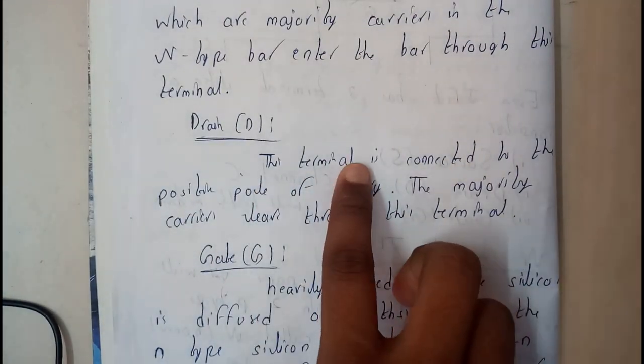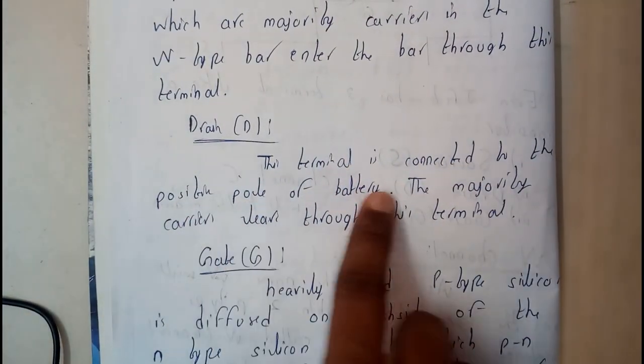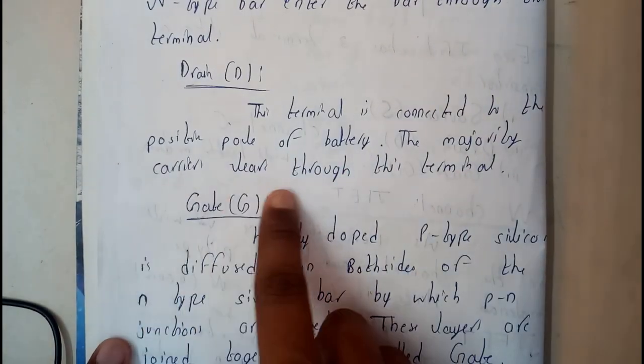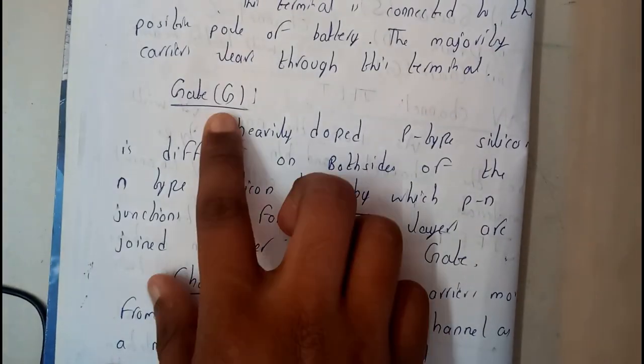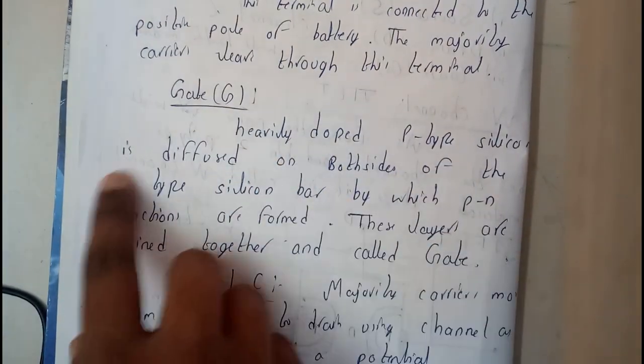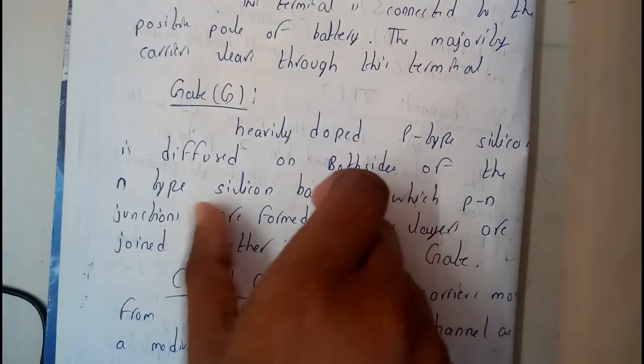Drain: the terminal is connected to the positive pole of the battery. The majority carriers leave this terminal.